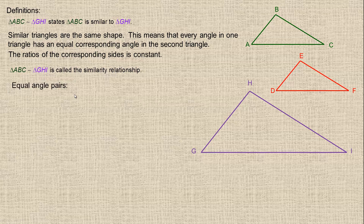There are equal angle pairs in these triangles. Angle A and angle G are equal — notice first letter, first letter. Angle B and angle H are equal. And angle C and angle I are equal as well.